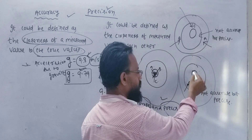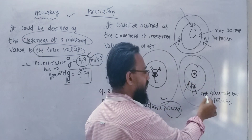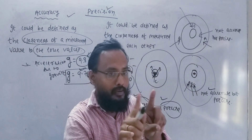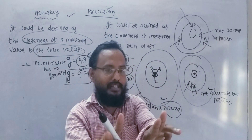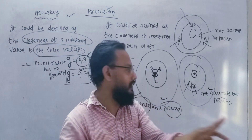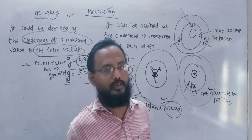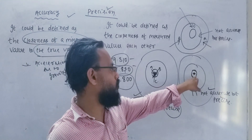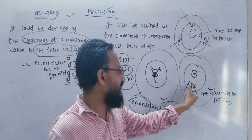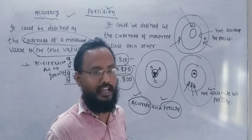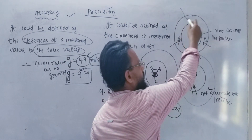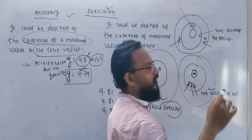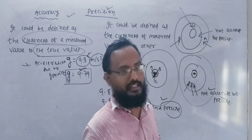Looking at a target diagram: if the three values are very close to each other but not close to the true value, they are precise but not accurate. Accurate means close to the true value. We can add two destinations at the same point. Then we add points A, B, and C.